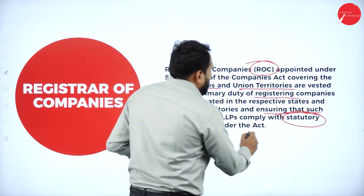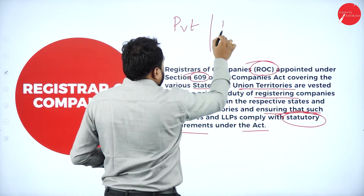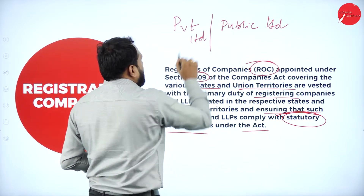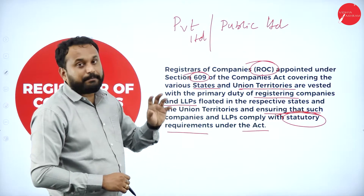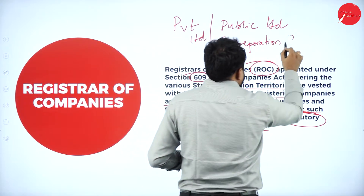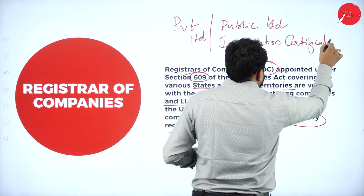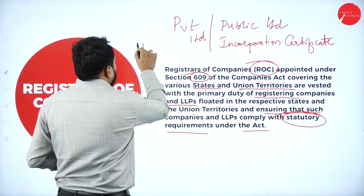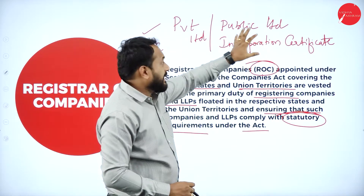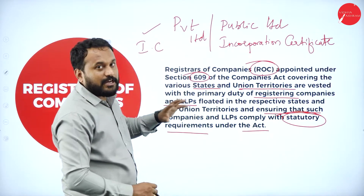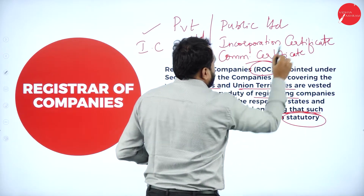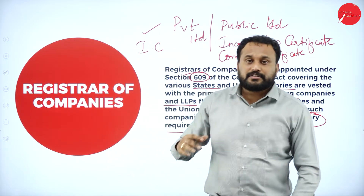For a private limited company, you need one certificate — the incorporation certificate — issued by the Registrar of Companies to start operating. However, for a public limited company, there are two certificates required. After getting the incorporation certificate, the public limited company must again approach the Registrar of Companies, who will then issue a commencement certificate. Both certificates are very important before a public limited company can begin business.